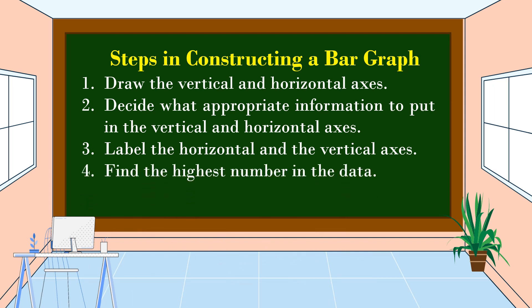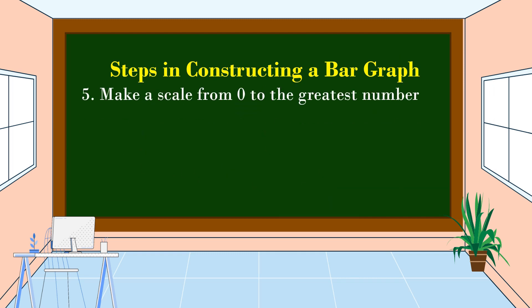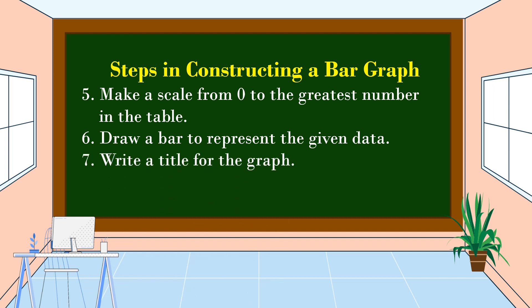Number four: find the highest number in the data. Number five: make a scale from zero to the greatest number in the table. Number six: draw a bar to represent the given data. Number seven: write a title for the graph.